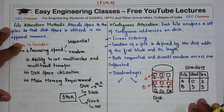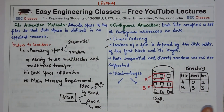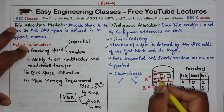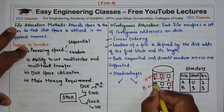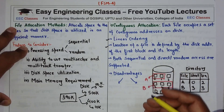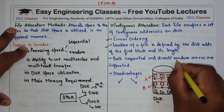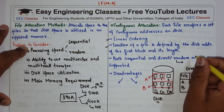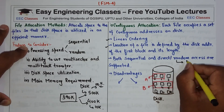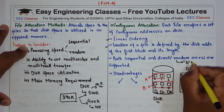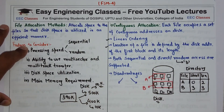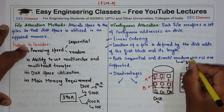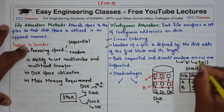Both sequential and random access are supported in contiguous allocation. For sequential access, the file system remembers the disk address of the last block and when required reads the next block. For random access, if the file starts at block B and needs to access the i-th record, the address or location will be B plus i.